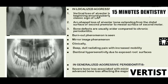In generalized aggressive periodontitis, these patients come to your clinic and you feel helpless — under the age of 30, the patient presents with severe bone loss and advanced bone loss affecting the majority of teeth. Sometimes you have to advise extraction of these teeth because such severe destruction has taken place at such a young age, which is very disheartening.